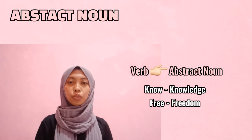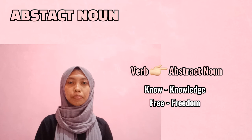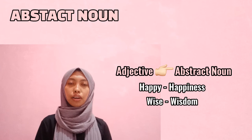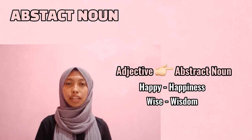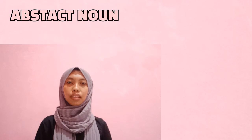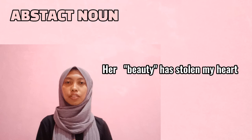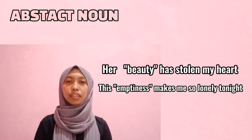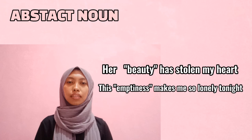The third is abstract noun from adjective: from 'happy' to 'happiness', from 'wise' to 'wisdom'. Example abstract nouns in sentences: 'Her beauty has fallen my heart.' 'This emptiness makes me so lonely tonight.' Beauty and emptiness are abstract nouns because we cannot use our five senses to feel beauty or emptiness.